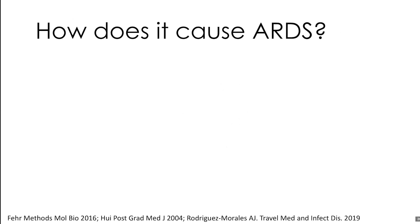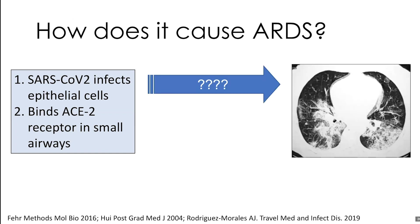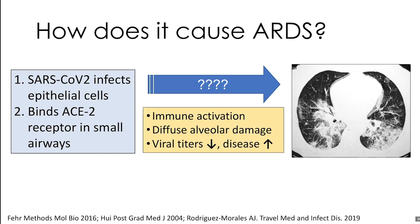The last big question is how does it cause acute respiratory distress syndrome? We really don't have a good understanding. What we do know is that SARS-CoV-2 infects epithelial cells in the lower respiratory tract, binding via the angiotensin-converting enzyme 2 receptor in these small airways. In a subset of patients, we see them go on to severe respiratory failure. Studies suggest significant immune activation — elevations in IL-6, dysregulation of T cells — and pathology shows diffuse alveolar damage. Decreased viral titers with increasing disease suggest this may be an immune-mediated process.